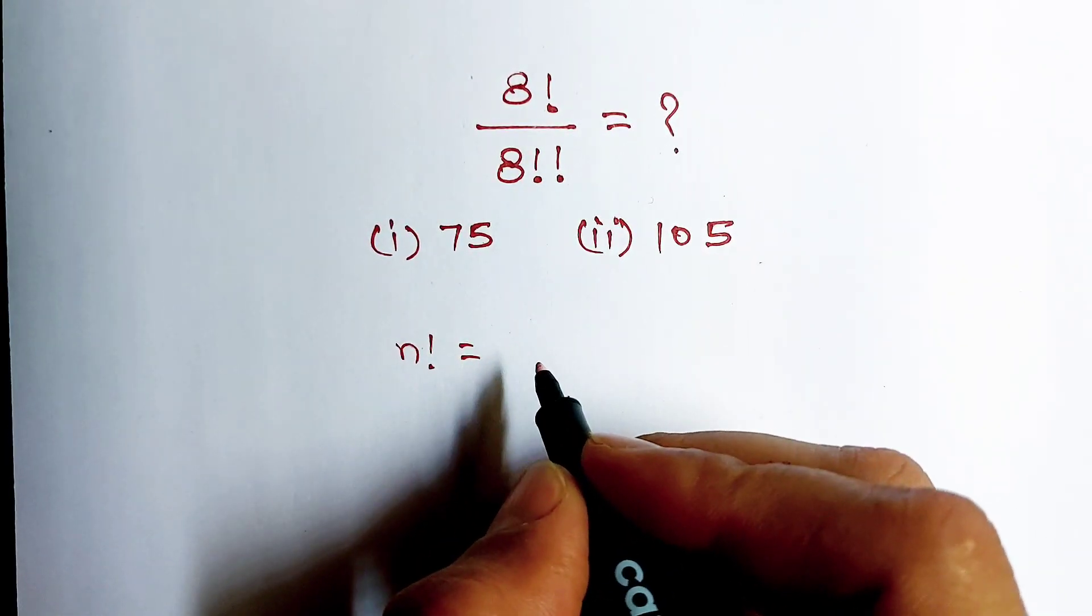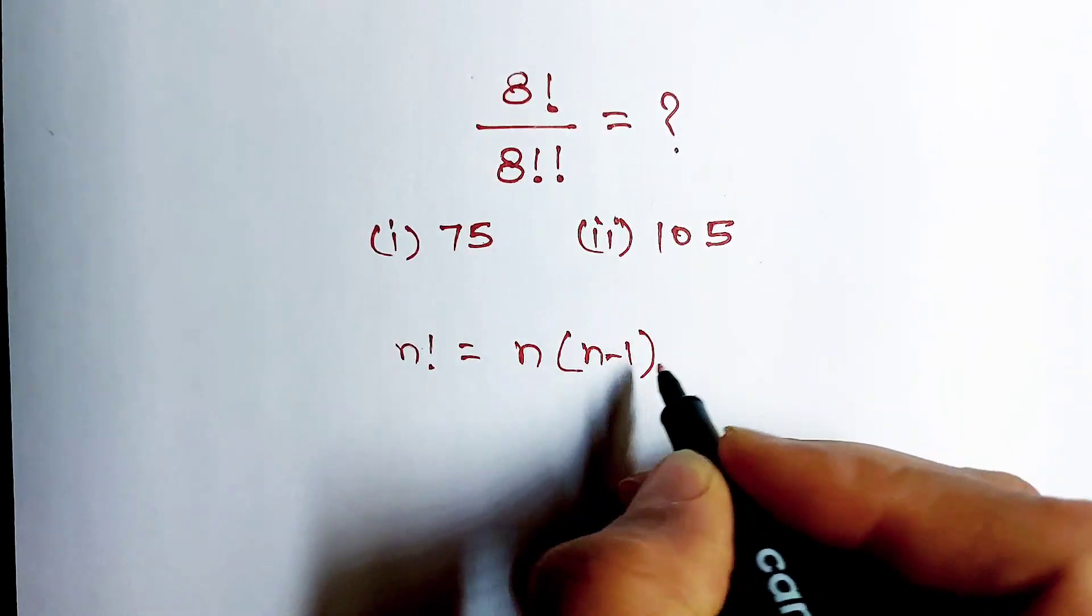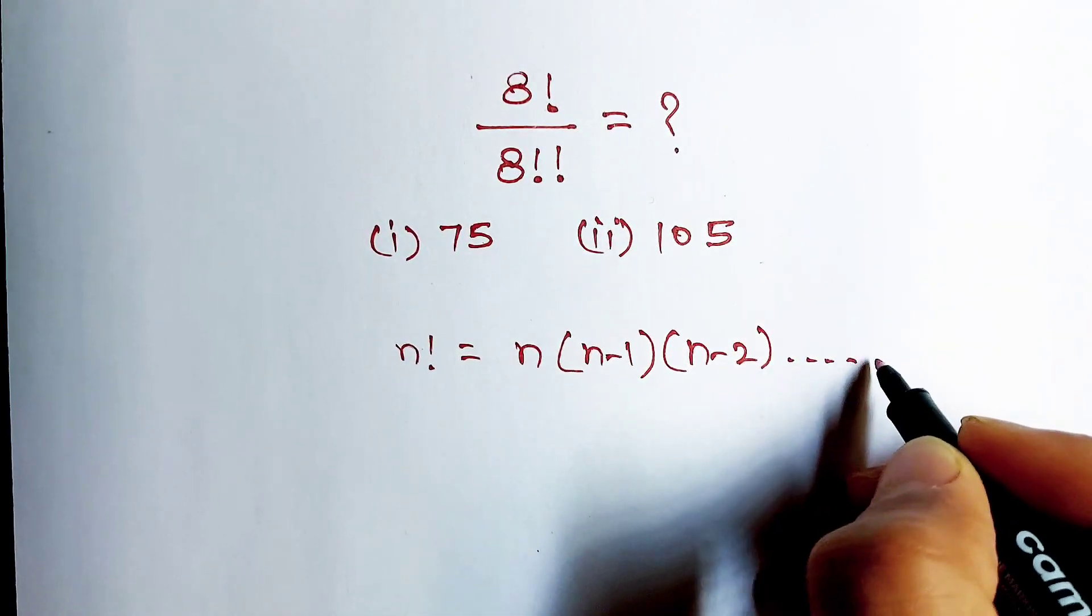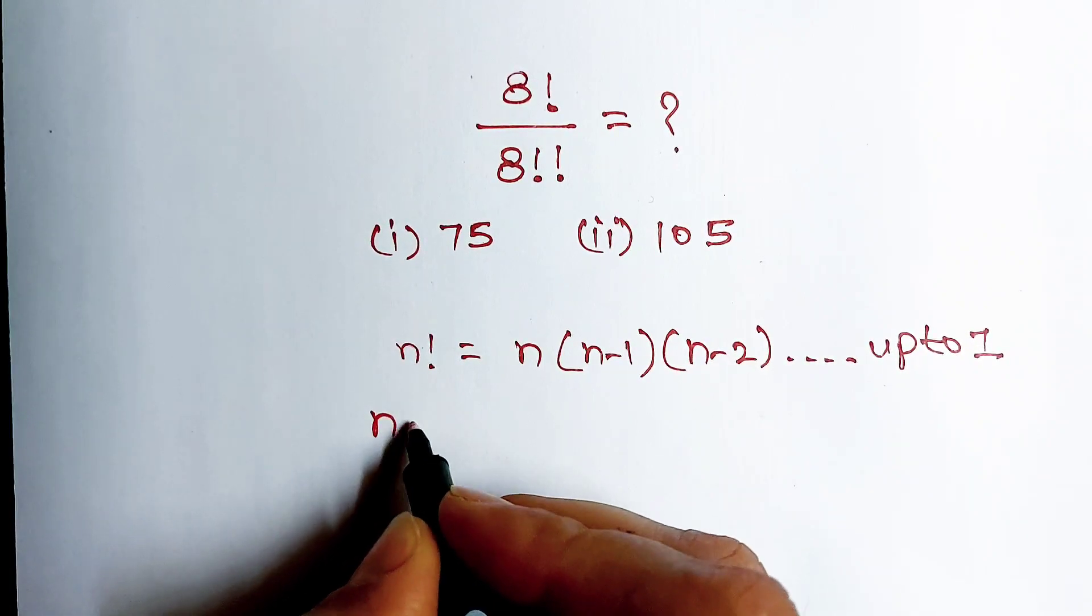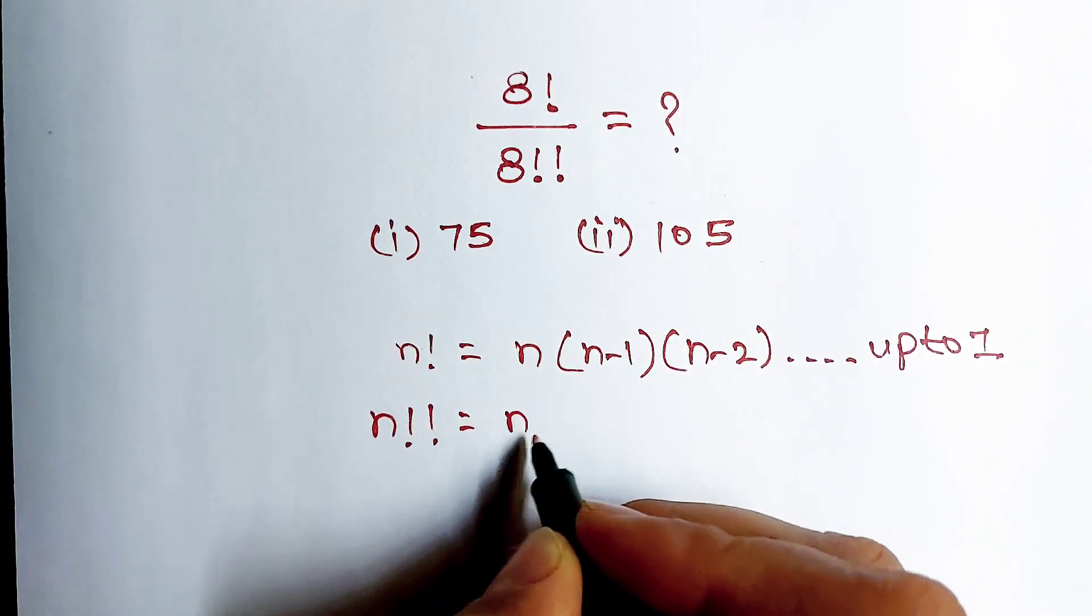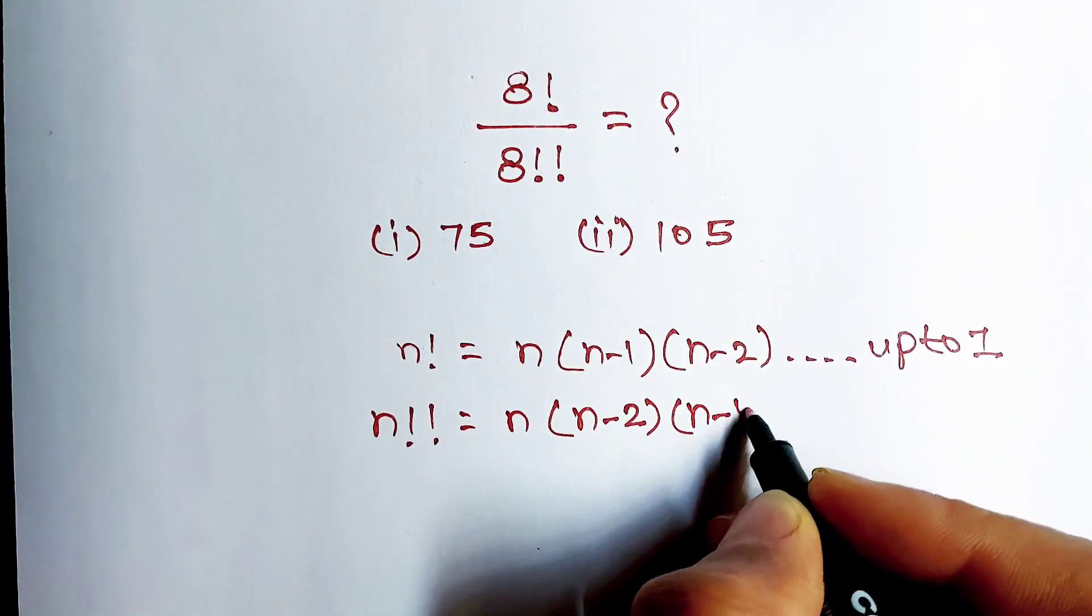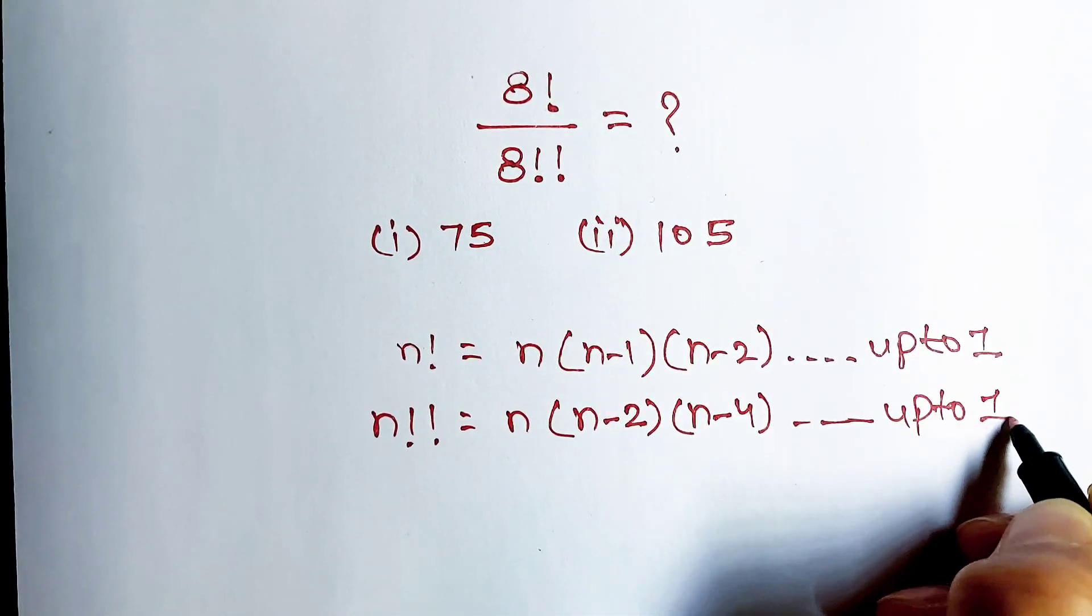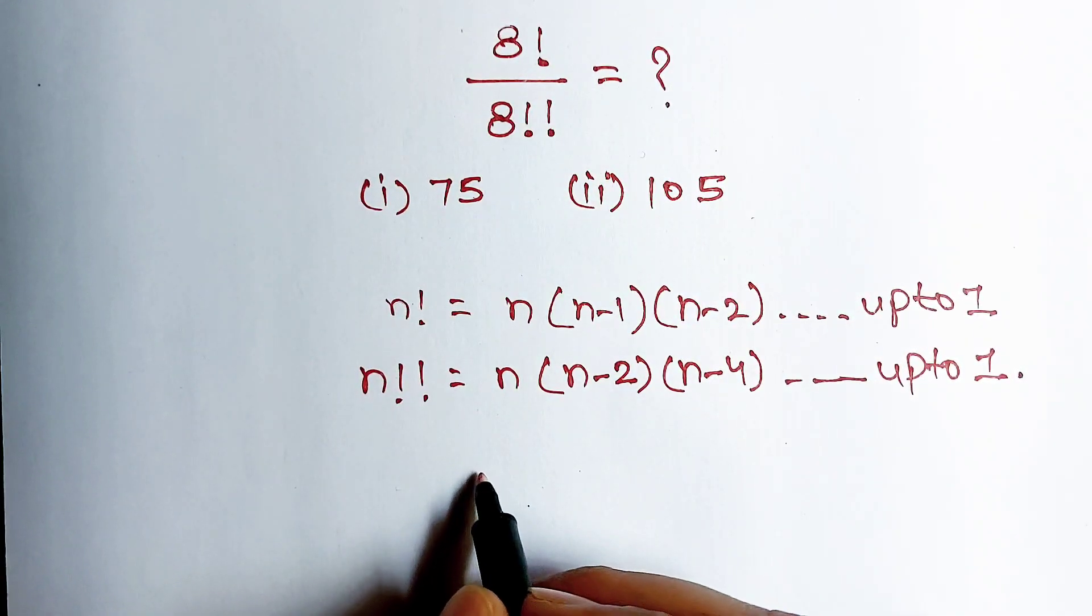n multiply n minus 1 multiply n minus 2 up to 1, and double factorial of n is equal to n multiply n minus 2 multiply n minus 4 up to 1.